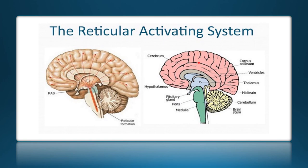This image breaks everything down nicely, showing the cerebrum, hypothalamus, pituitary, pons, medulla, cerebellum, brain stem, and thalamus. A lot of important processes take place within these structures, which we'll start to learn about. That concludes this presentation.